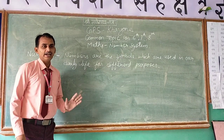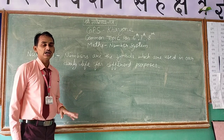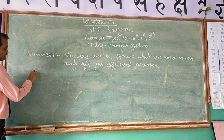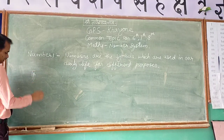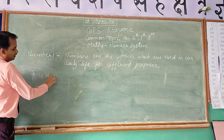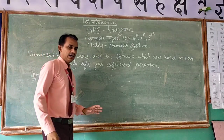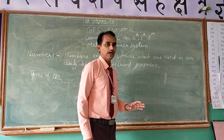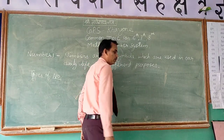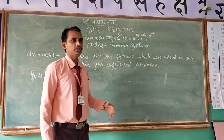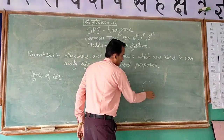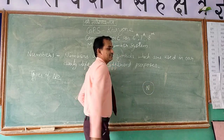There are different types of numbers which we are going to study now. So, the second thing is types of numbers. First, I am going to explain using a picture. You are very familiar with numbers 1, 2, 3, 4, 5, 6 and so on. These numbers are known as natural numbers.